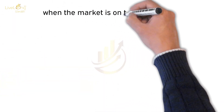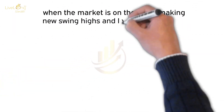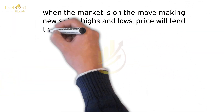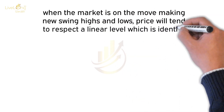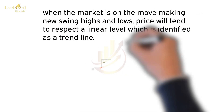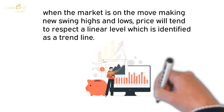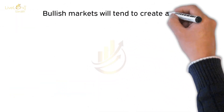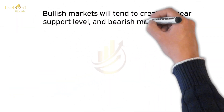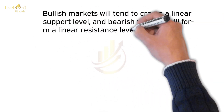When the market is on the move making new swing highs and lows, the price will tend to respect the linear level identified as a trend line. Bullish markets will tend to create a linear support level, and bearish markets will form a linear resistance level.